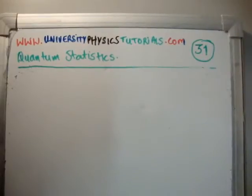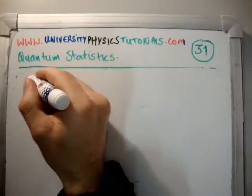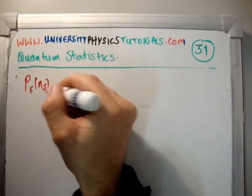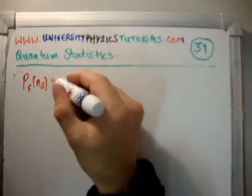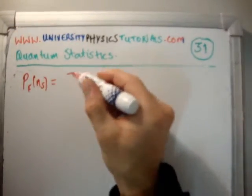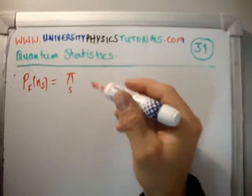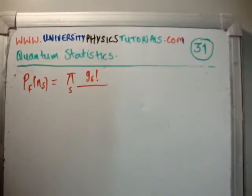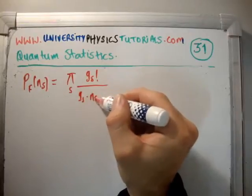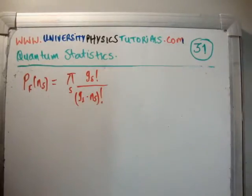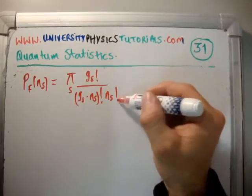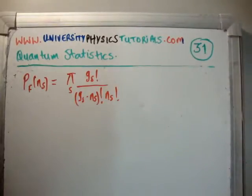So we're talking about fermions. In a previous video I proved that the probability for fermions as a function of the number of particles in each macro box is the multiplication over s of the number of states in each macro box factorial, then g sub s minus n sub s factorial, then n sub s factorial. What we're going to do now is follow the usual procedure — we're trying to maximize this function.